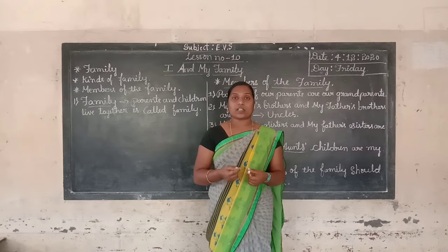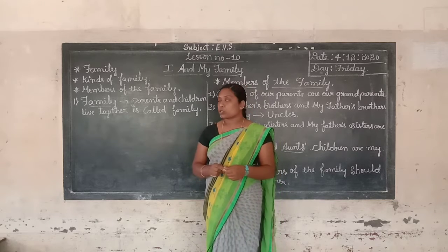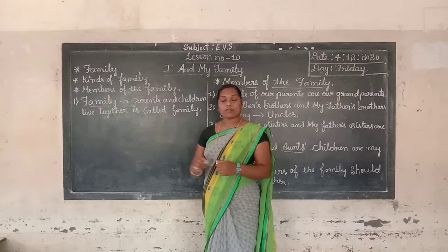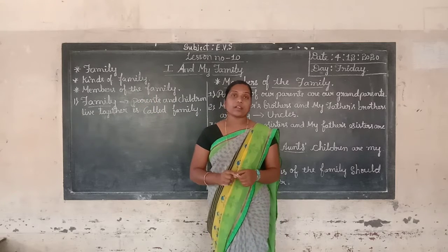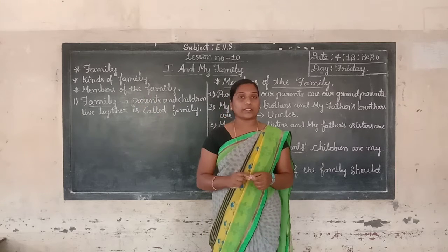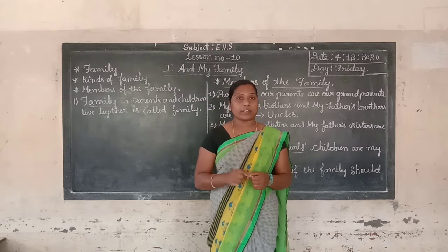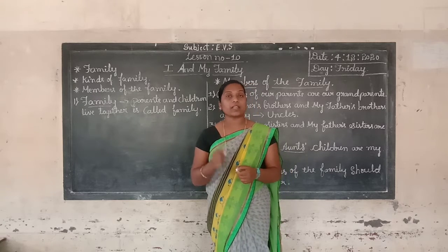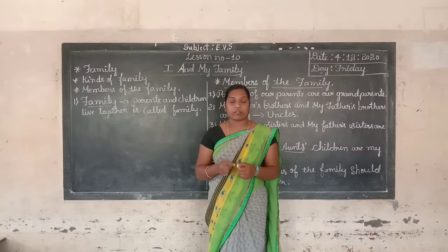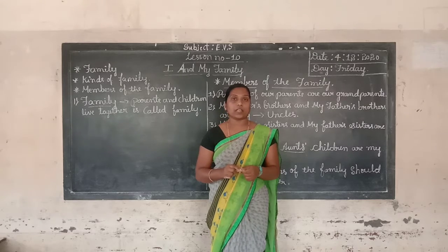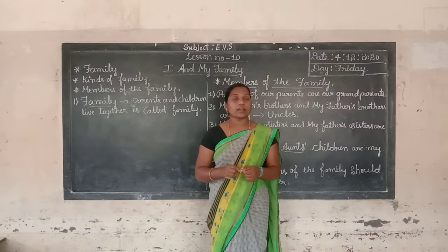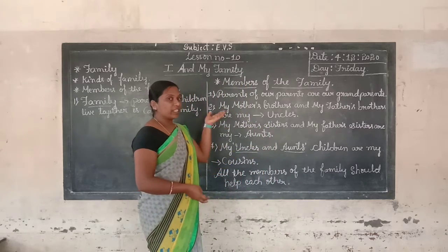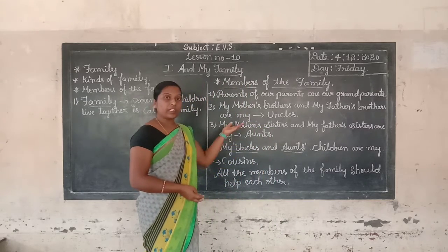So next we go to the kinds of family. There are two kinds of family. The first is nuclear family, also called a small family. The second one is large family, also called a joint family. Now let us look at each one of them.